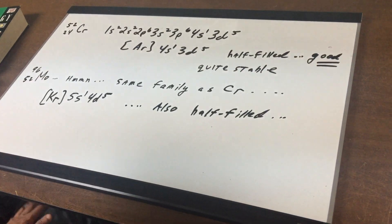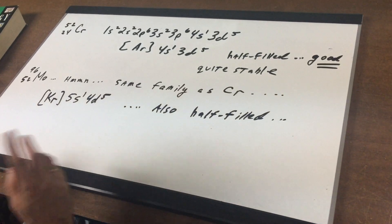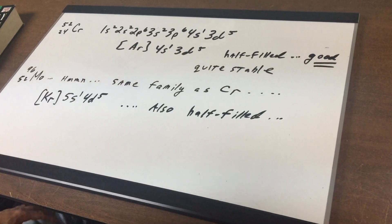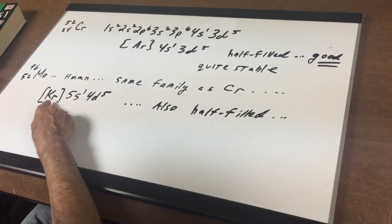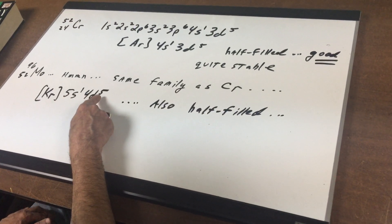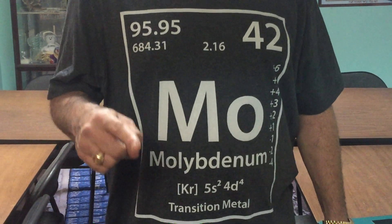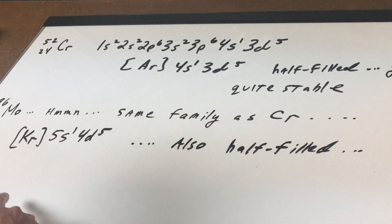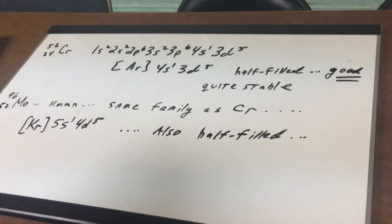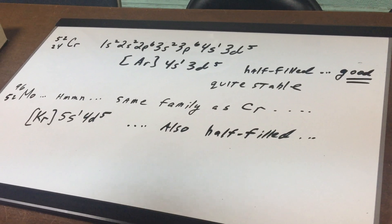Molybdenum is element 42, with 52 electrons — written as Mo. I'm not going to expect you to write the full configuration for 52 electrons, but if you make the reach and said that chromium has six unpaired electrons, you would have been correct to say molybdenum also has six unpaired electrons. When you do the configuration you get the krypton configuration plus 5S2 4D4. Look at my shirt again — it says 5S2 4D4. But that electron from the 5S should have been promoted into the 4D, so the correct configuration is 5S1 4D5, giving half-filled stability.